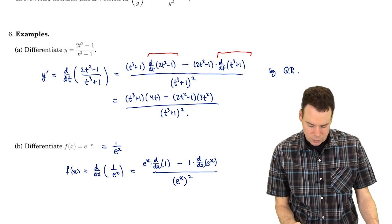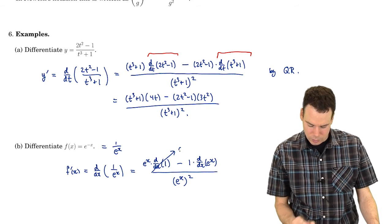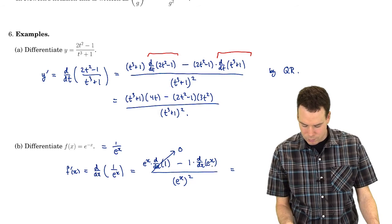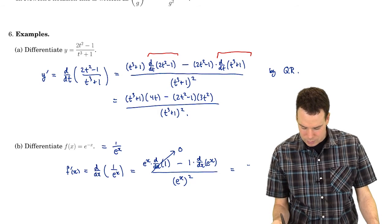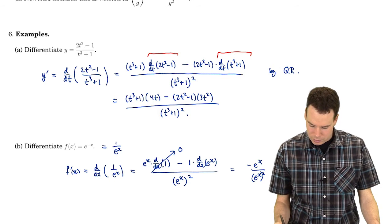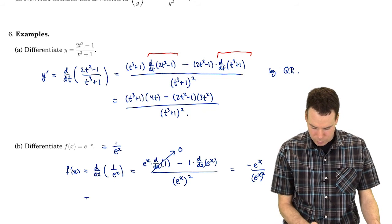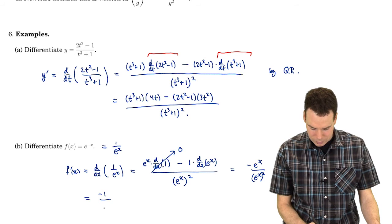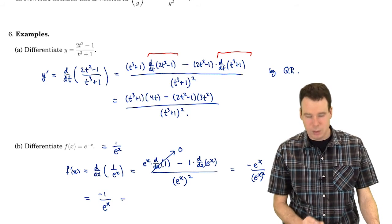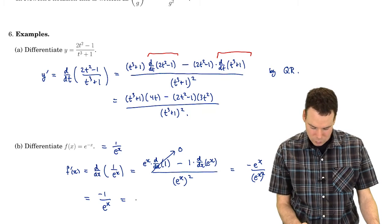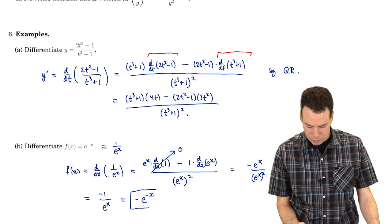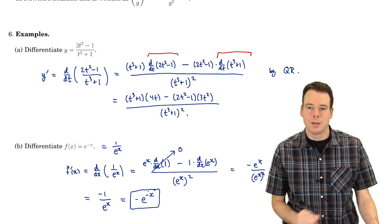The derivative of the top function — the derivative of the constant 1 — is zero. The derivative of e to the x is e to the x. So we've got an e to the x on top and e to the x squared on the bottom, and one of those e to the x's on top cancels with one on the bottom, giving us negative one over e to the x, which we can rewrite as negative e to the negative x. And so there is our derivative.